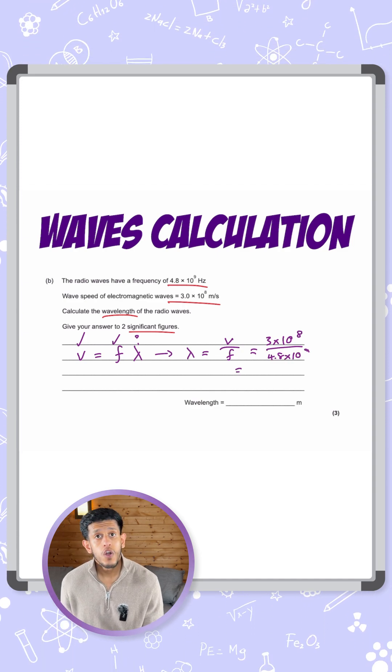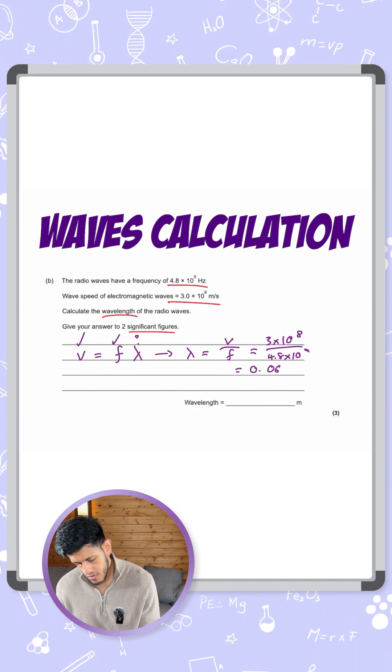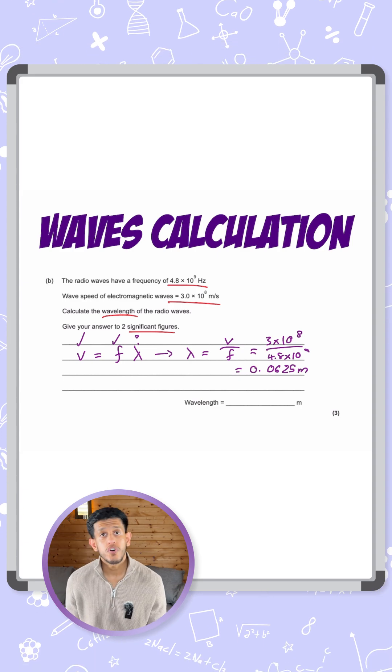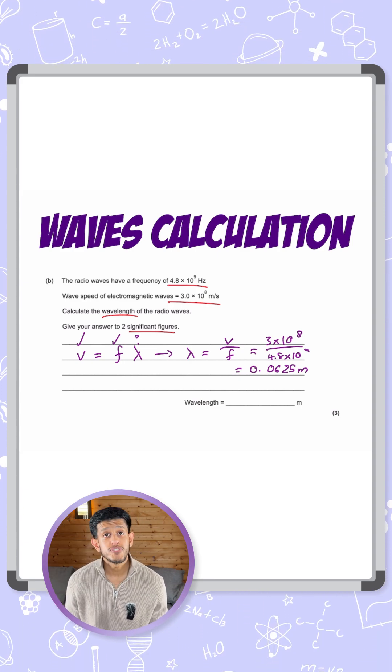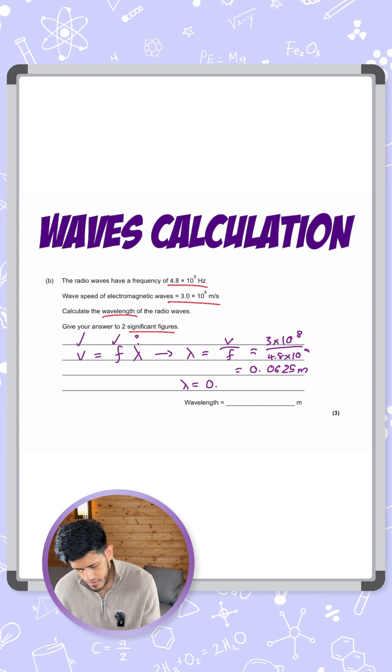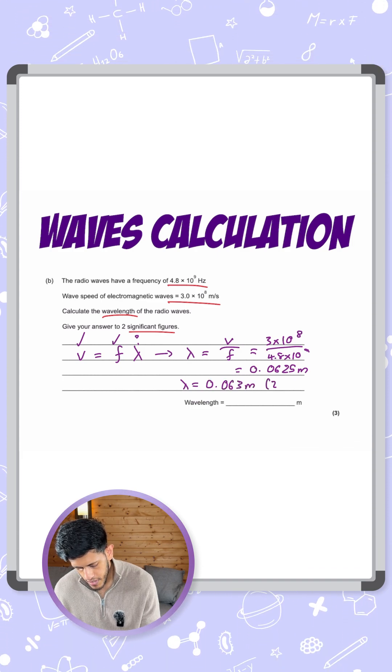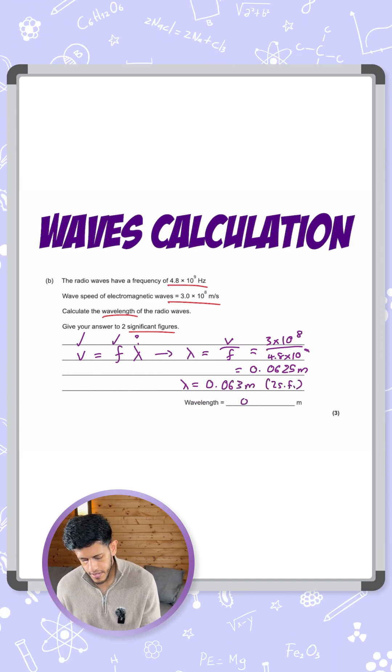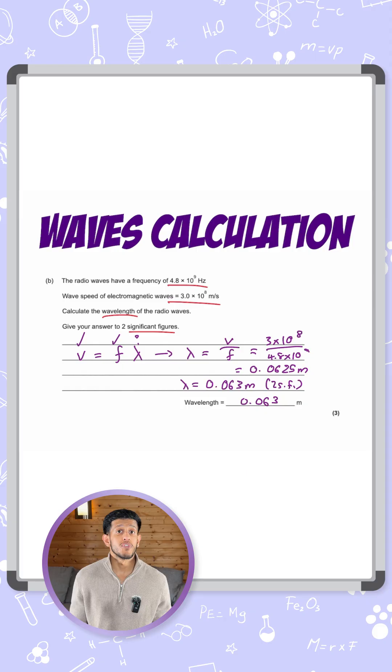And that should give us a value of 0.0625 meters. We've got two marks. The last bit, remember, is two significant figures. So to finish this off, I'll put at the end lambda equals 0.063 meters to two significant figures. And that is the answer that I'll put in the answer box they give for 3 marks.